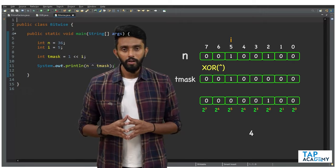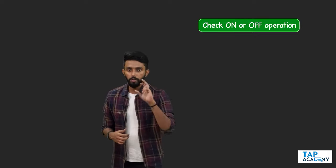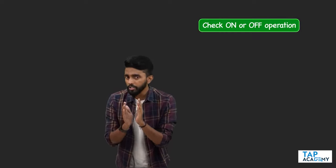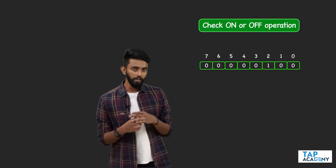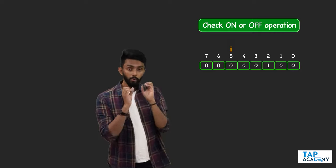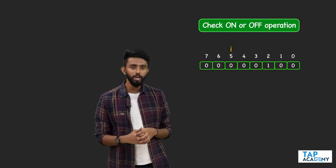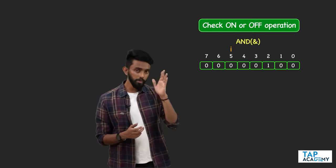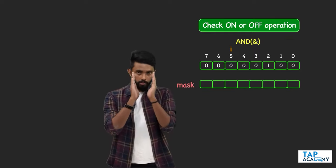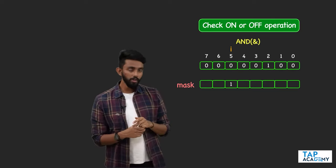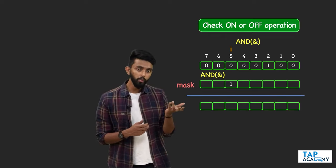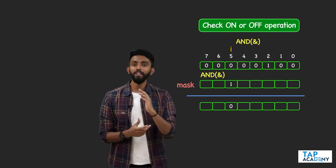The last and final operation you must know is check on or off — checking the state of a bit. We're not changing the bit, just checking whether it is on or off. Using the AND operation with a mask: in the mask, for the bit in question I'll make it one. If the bit is zero — zero AND one is zero. For all other bits I want them to become zero too, so I'll make the mask zero at those positions. Zero AND zero is zero, zero AND one is zero.